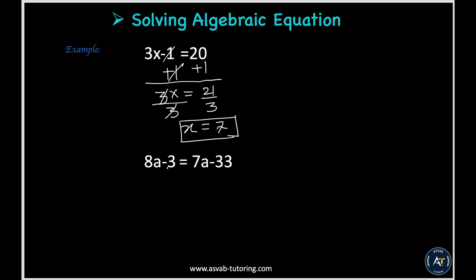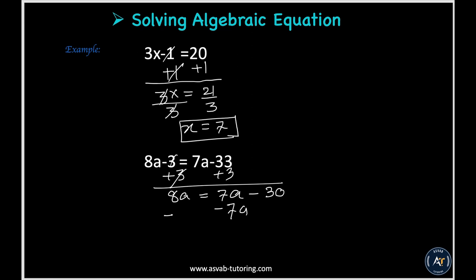The next one: you have 8a minus 3 equal to 7a minus 33. You have a negative sign, so do the opposite operation — add both sides by 3. The 3s cancel, giving you 8a equal to 7a minus 30. Now subtract 7a from both sides; 7a cancels out, so 8a minus 7a gives a equal to negative 30.